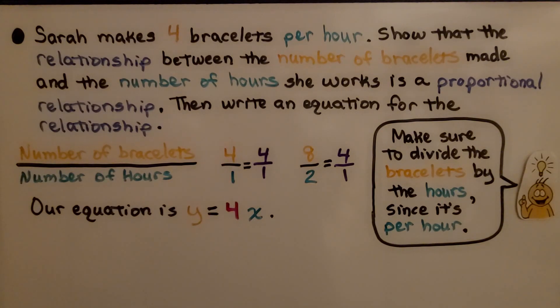Our equation is y equals 4x. Since we know she can make 4 bracelets per hour, we can put any amount of hours here for x and know the number of bracelets that she'll be able to make.